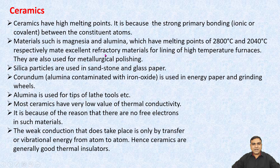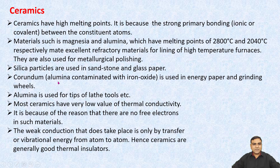They make excellent refractory materials for the lining of high temperature furnaces and are also used for metallurgical purposes. Silica particles are used in sandstone and glass paper. Corundum, meaning alumina contaminated with iron oxide, is used in emery paper and grinding wheels. Alumina is also used for the tips of lathe tools.